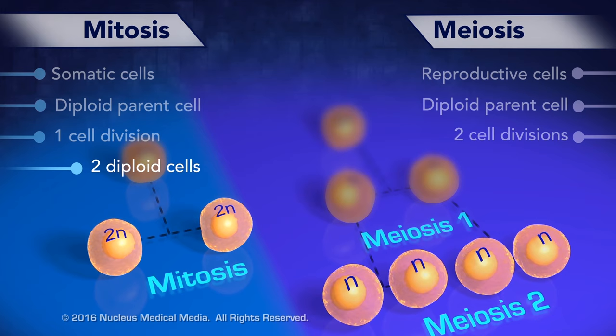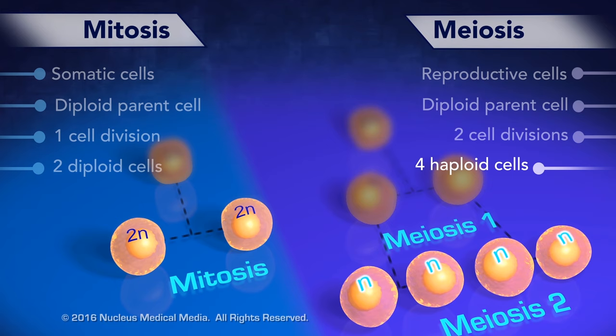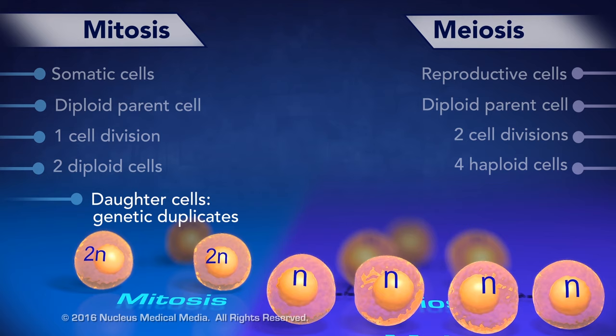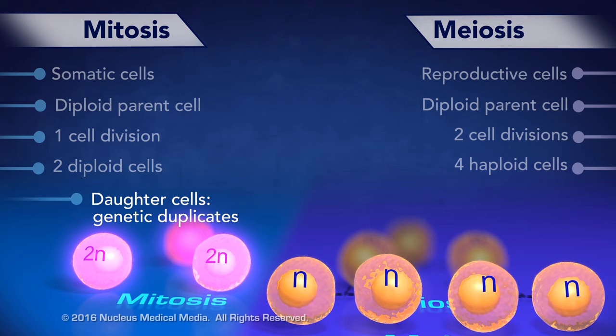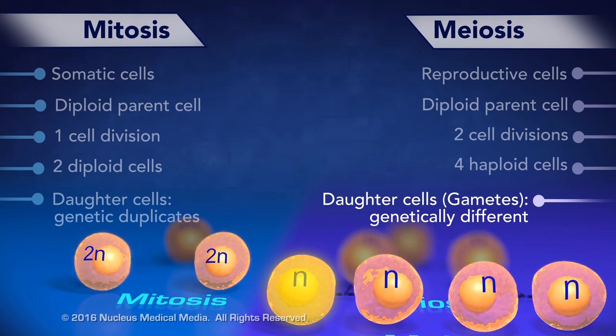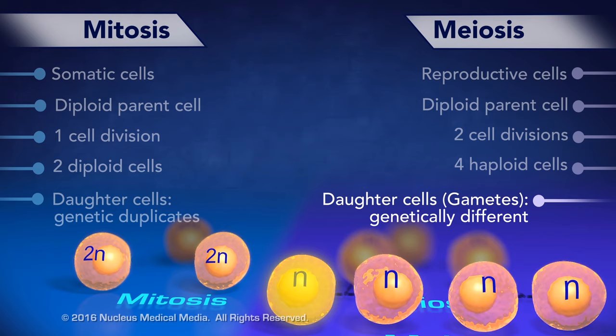Mitosis results in two diploid daughter cells. In contrast, meiosis results in four daughter cells that are haploid gametes. The two daughter cells resulting from mitosis are genetic duplicates of each other and the original cell, but each haploid gamete resulting from meiosis is genetically different from every gamete ever formed.